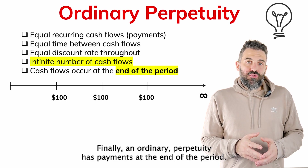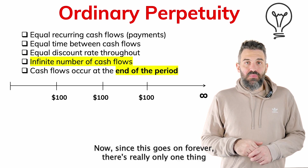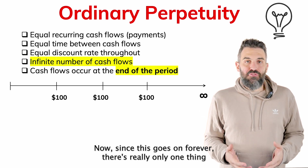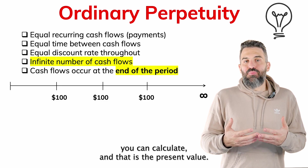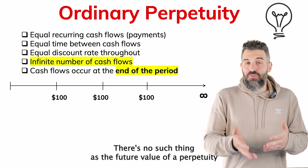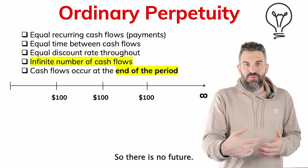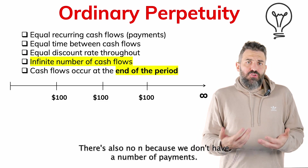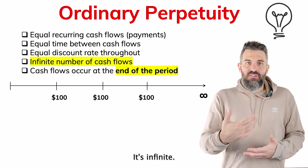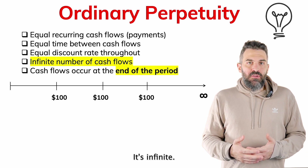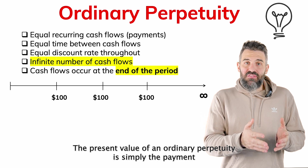An ordinary perpetuity has payments at the end of the period. Now since this goes on forever, there's really only one thing you can calculate, and that is the present value. There's no such thing as the future value of a perpetuity because it goes on forever, so there is no future. There's also no n because we don't have a number of payments — it's infinite.